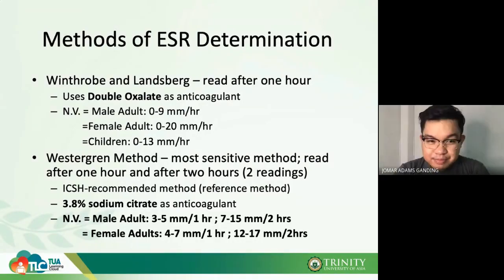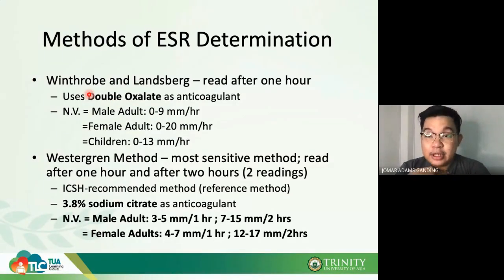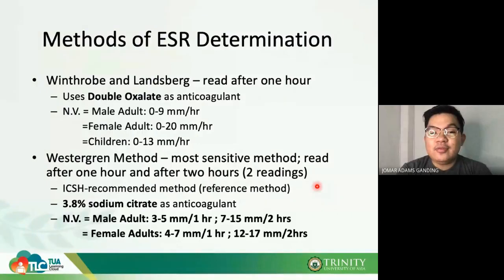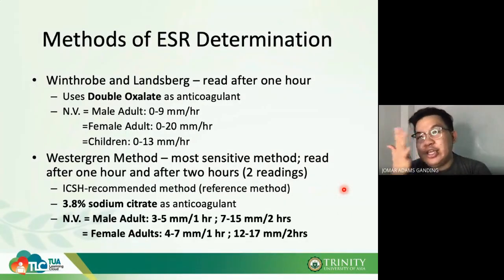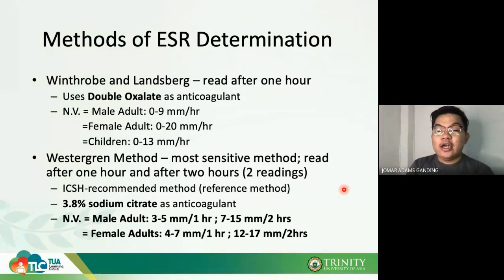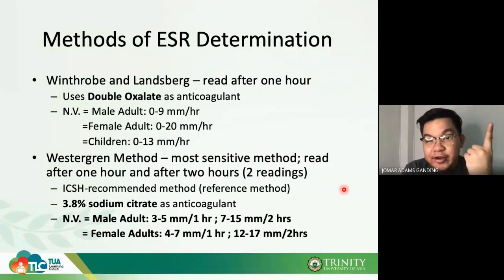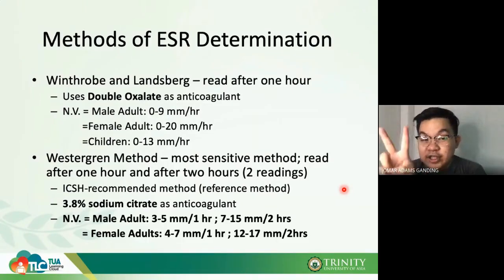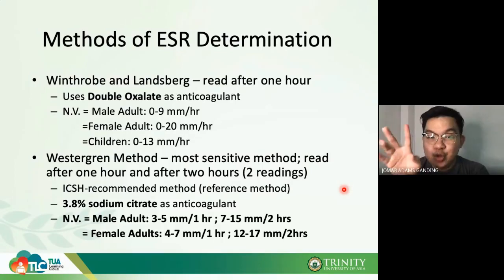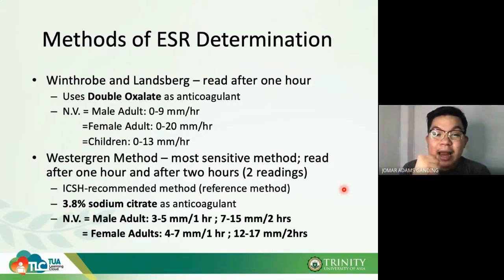We have two main ESR methods. The Wintrobe (and Landsberg) method: read after one hour, uses double oxalate as anticoagulant, and requires only one reading. The Westergren method: the most sensitive method, uses 3.8% sodium citrate in a black top tube, and requires two readings — one at one hour and another at two hours.